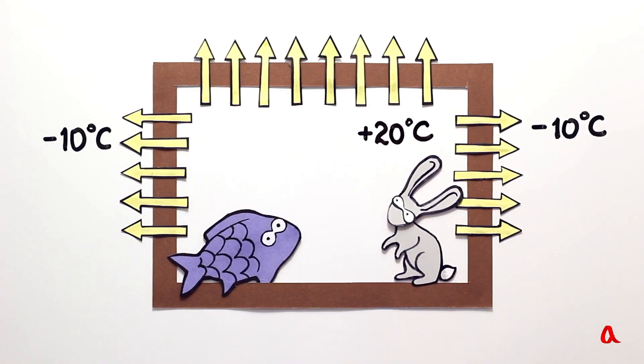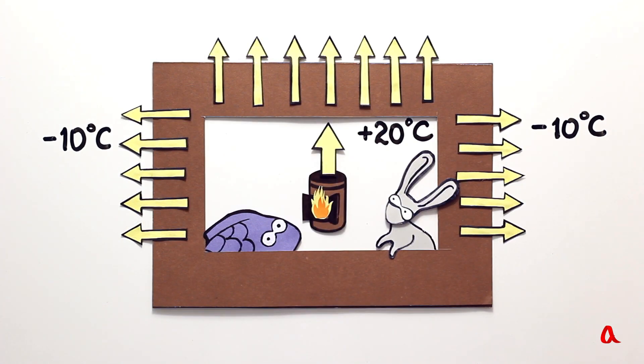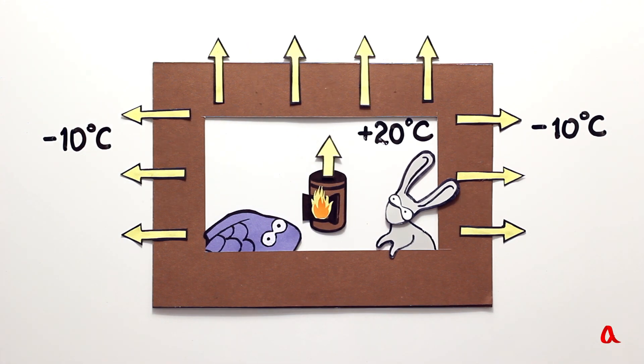Secondly, thermal flow intensity depends on the thickness of the wall. A wall twice as thick will let through a thermal flow which is twice weaker. This will allow decreasing energy expenditure twice.